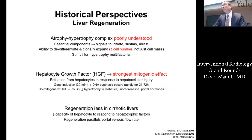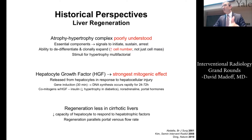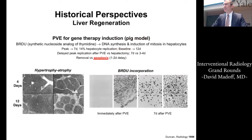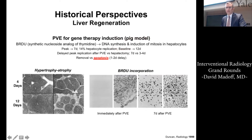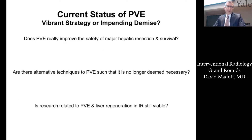The mechanisms of liver regeneration are still poorly understood. It's been unclear whether it's an increase in cell size — hypertrophy — or in cell number. We know the strongest mitogenic effect is from hepatocyte growth factor. Insulin is co-mitogenic with HGF, and patients with diabetes actually have less regenerative capacity. Regeneration also occurs less in cirrhotic livers than in normal livers. A study at Mallinckrodt doing PVE for gene therapy showed hypertrophy, atrophy, and BrdU incorporation into cells, confirming true cellular replication.